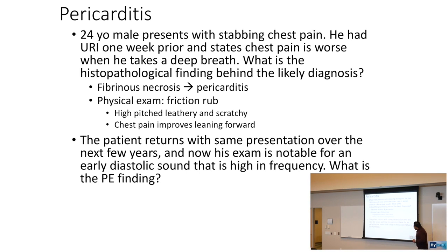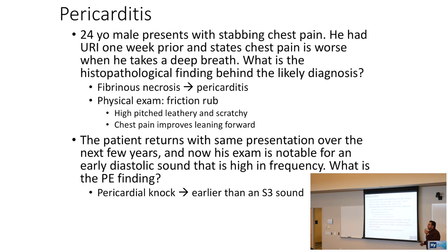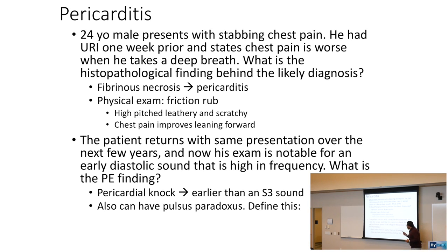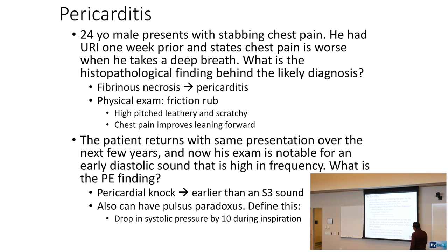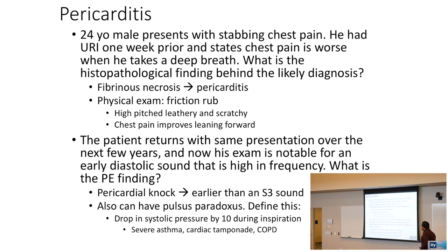If the patient returns with the same presentation over years and now has an early diastolic high-frequency sound, that is a pericardial knock, related to chronic pericarditis. Pericardial knock is associated with an earlier S3 sound and pulsus paradoxus — a drop in systolic pressure of more than 10 mmHg during inspiration.